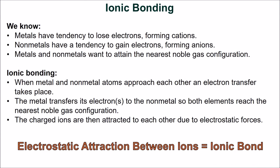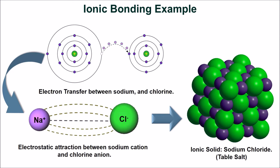An ionic bond is generally formed between metals and nonmetals. When metal and nonmetal atoms approach each other, an electron transfer reaction takes place. The metal transfers one or more electrons to the nonmetal, so both atoms reach the nearest noble gas configuration. For example, a sodium atom transfers an electron to a chlorine atom. The resulting charged ions are attracted to each other due to electrostatic forces — the positively charged sodium cation is attracted to the negatively charged chlorine anion, forming the ionic solid sodium chloride, commonly known as table salt.